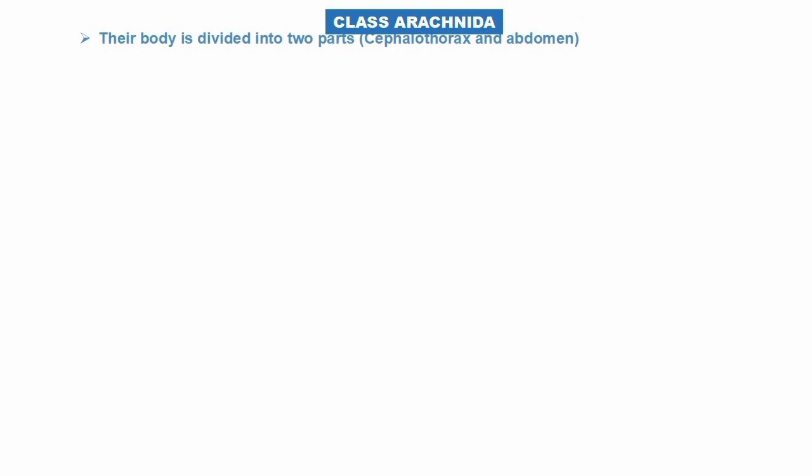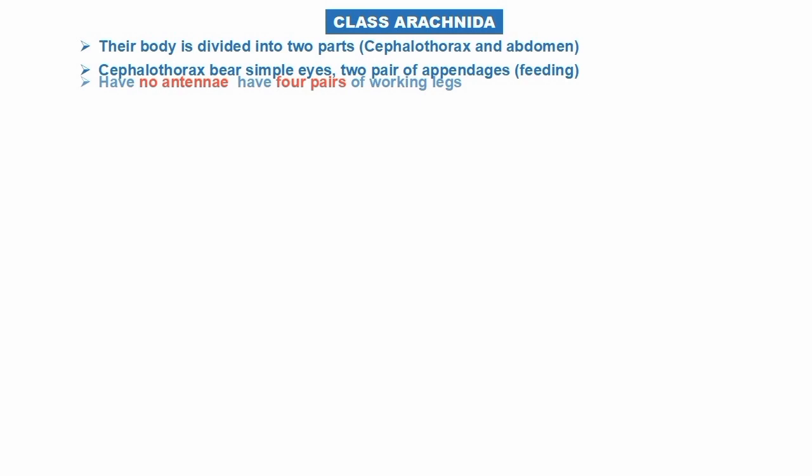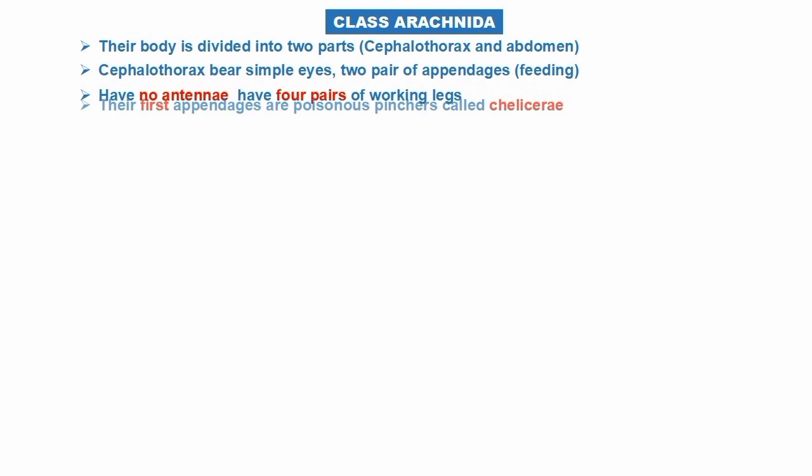We will talk about the next class, that is class Arachnida. Their body is divided into two parts: cephalothorax and abdomen. The cephalothorax bears simple eyes with two pairs of appendages used for feeding. They have no antennae and have four pairs of walking legs — that is Arachnida.